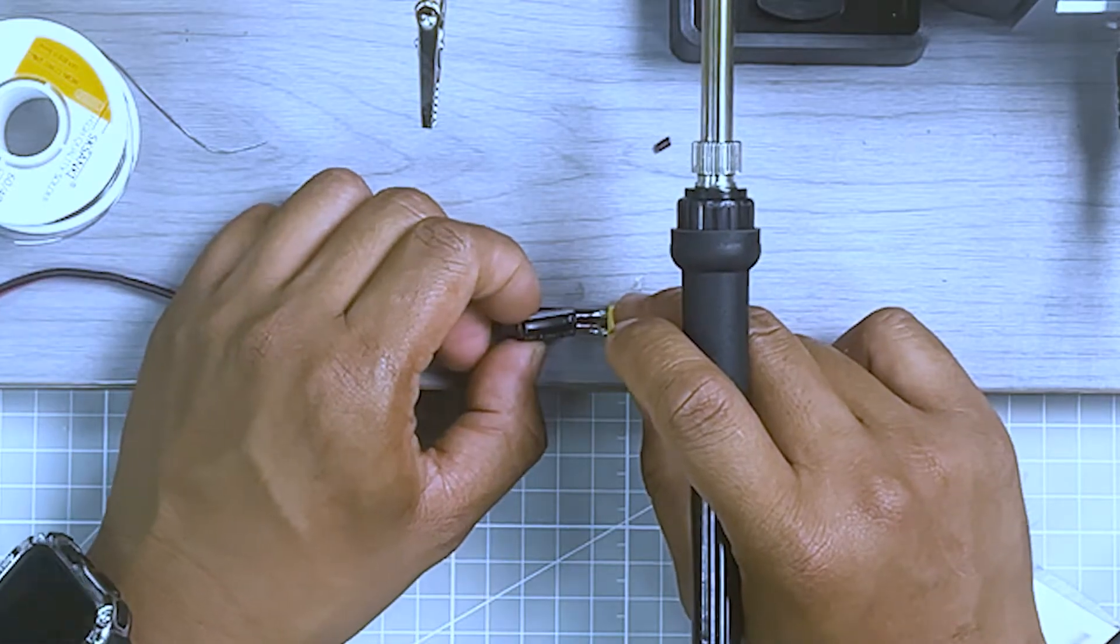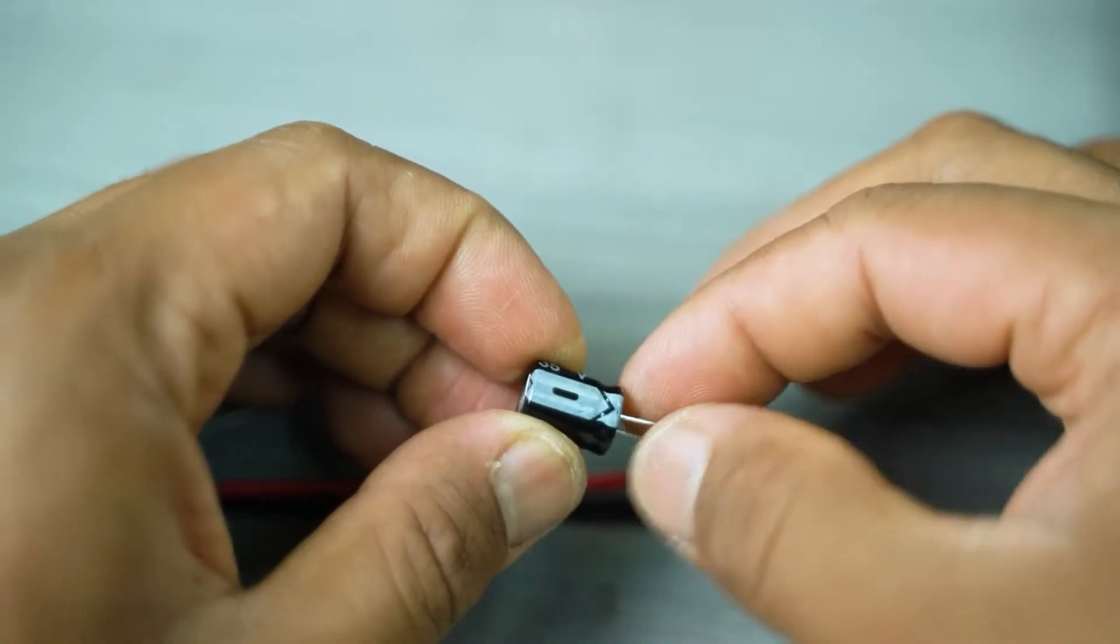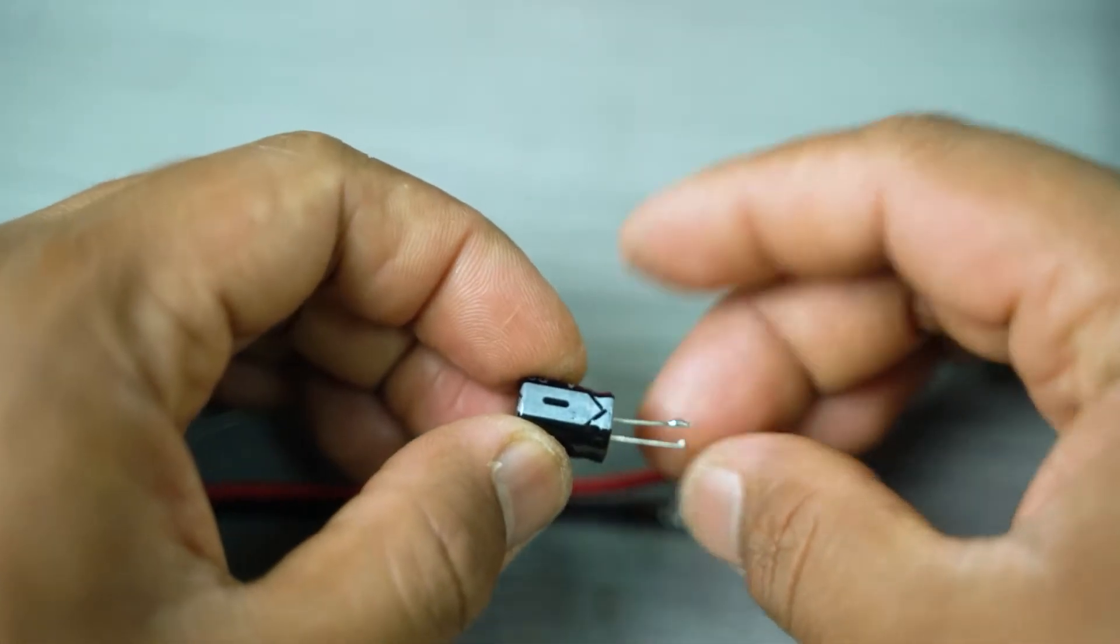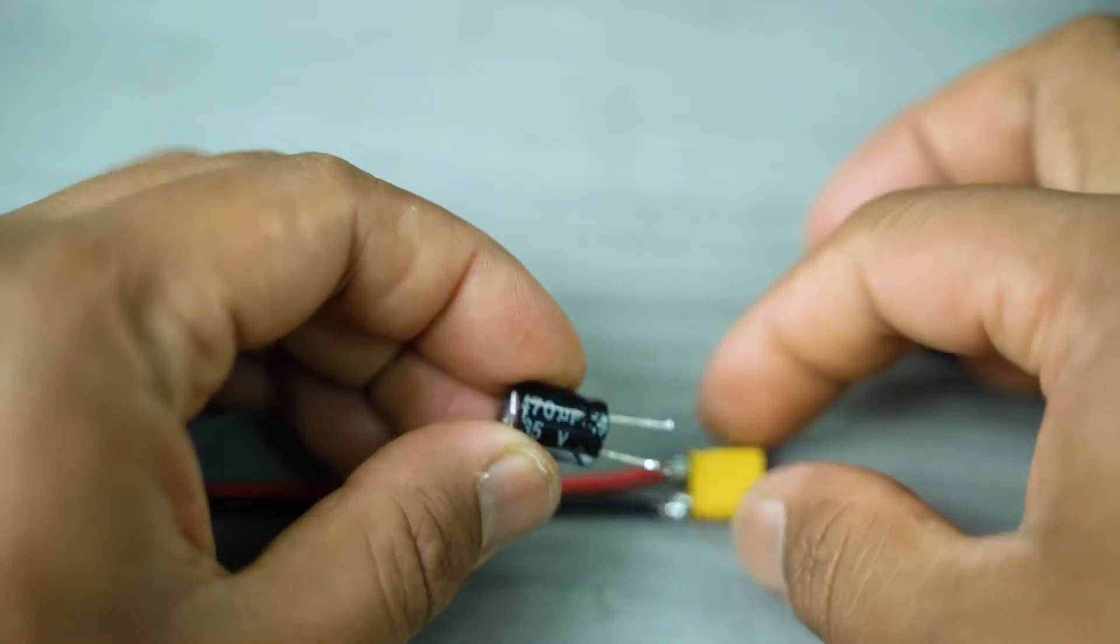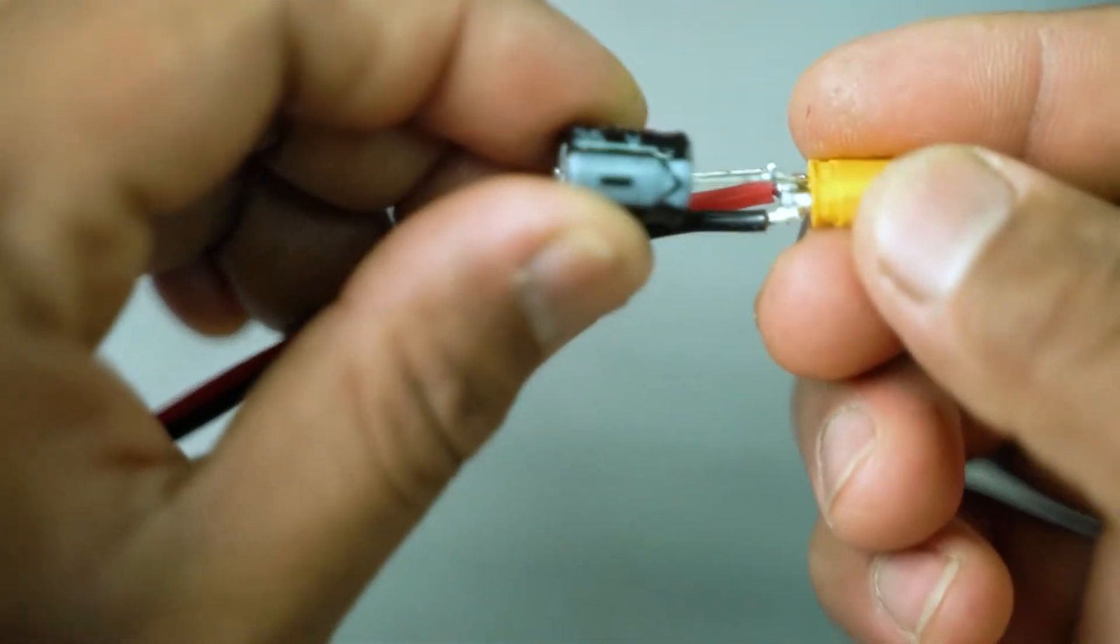Attach together the wire and the XT-30 socket by soldering both. After that, solder the capacitor to the XT-30 socket, making sure that the negative and the positive of the capacitor are on the right position.